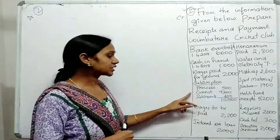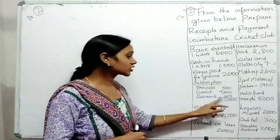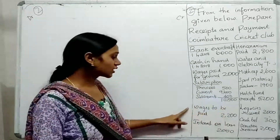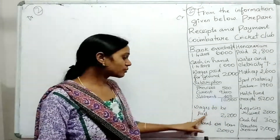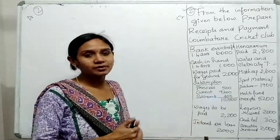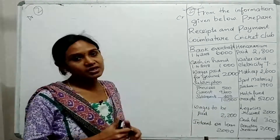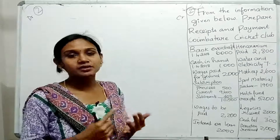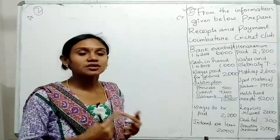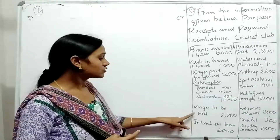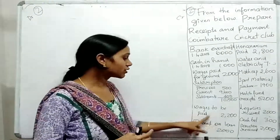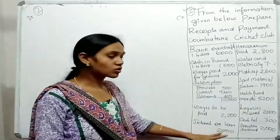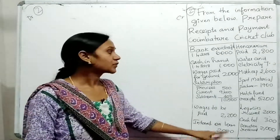Subscription covers previous year, current year, and subsequent year — total amount is $10,500. Next is wages to be paid, which are Outstanding. Depreciation and Accrued items: $2,000. Next, interest on loan: $2,000.